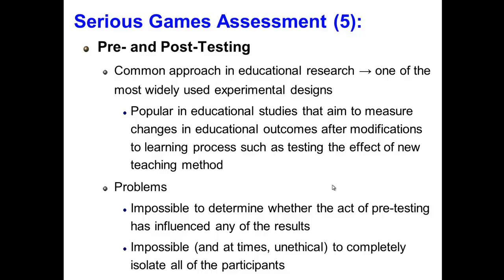Within a pre- and post-test design, participants are randomly allocated to either a treatment group or a control group. Both groups receive an identical pre-test to gauge their prior knowledge and ultimately ensure that both groups are equivalent. Upon completion of this pre-test, each group receives a different treatment — either the intervention being examined (in the case of simulations and serious games, they will use the simulation or the serious game), or the usual treatment (where they won't play the simulation or serious game, but rather rely solely on traditional instructional approaches).